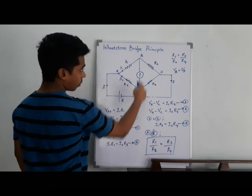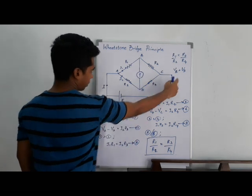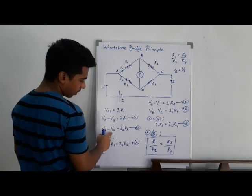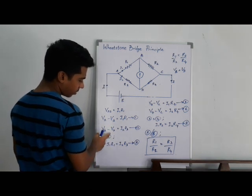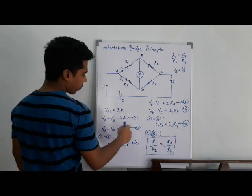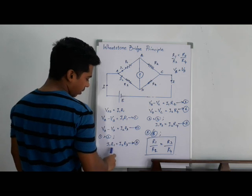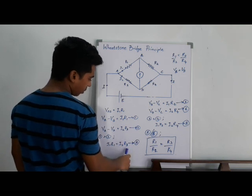Now we know VB and VD is same, right? So if you consider these three equations, VB and VD is same, therefore the right hand sides are equal. Therefore I can equate the right hand sides. So I get from equation 1 and 2, I1 R1 is equal I2 R3. So this is my equation A.